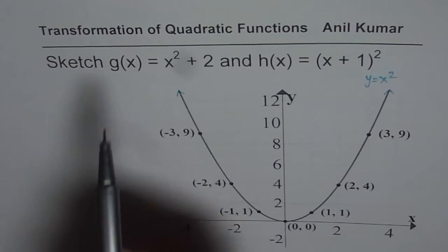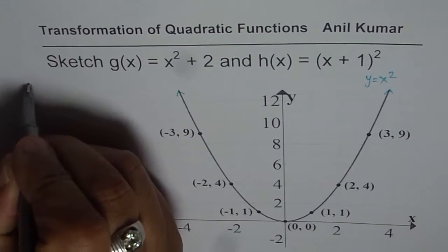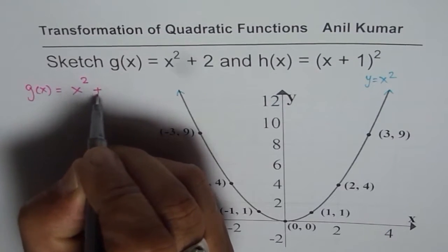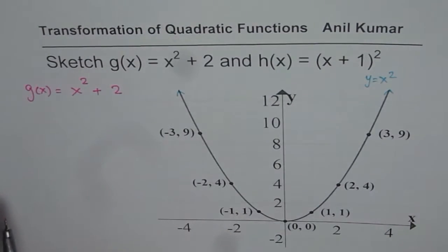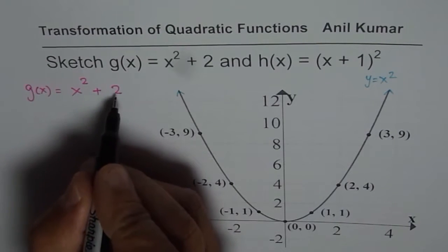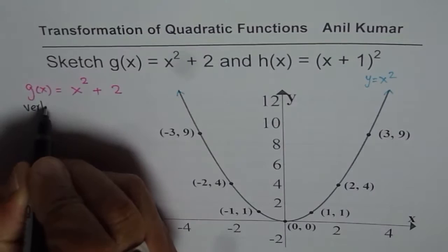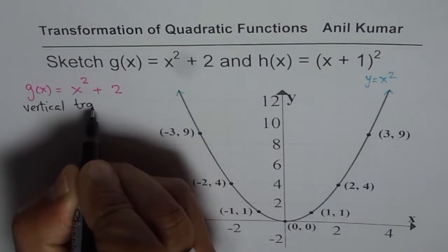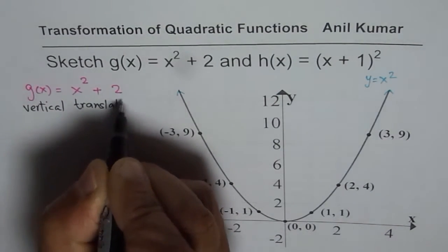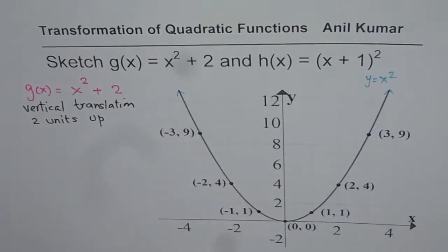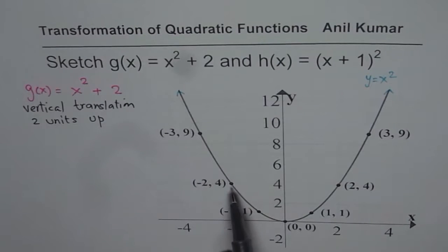Let's begin with g of x equals x squared plus 2. What kind of transformation has been applied to x squared? In this function we have x squared plus 2, so the type of transformation is a vertical translation — we have translated the graph of x squared 2 units upwards. Each point on the graph actually moves 2 units up.